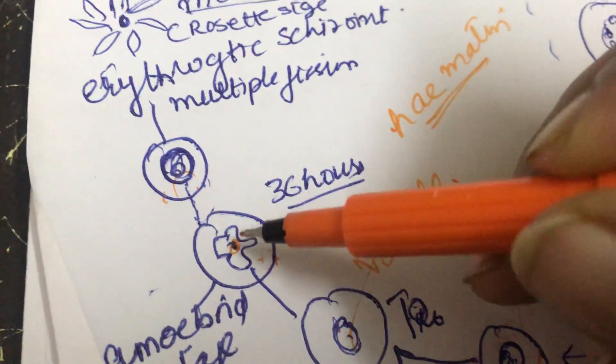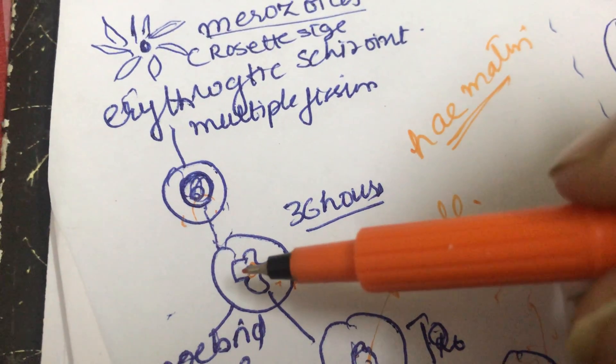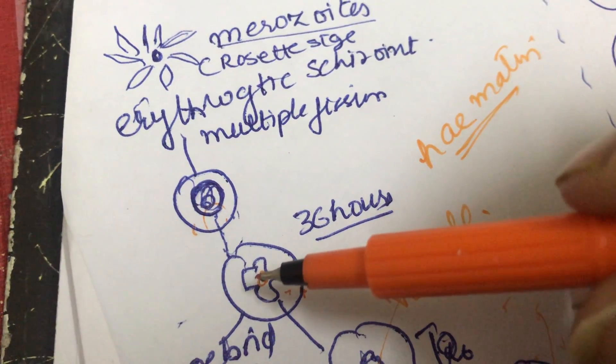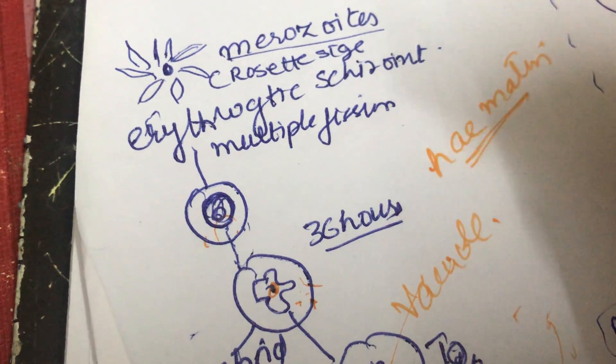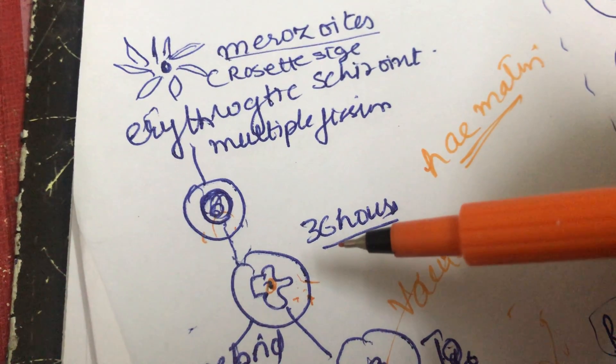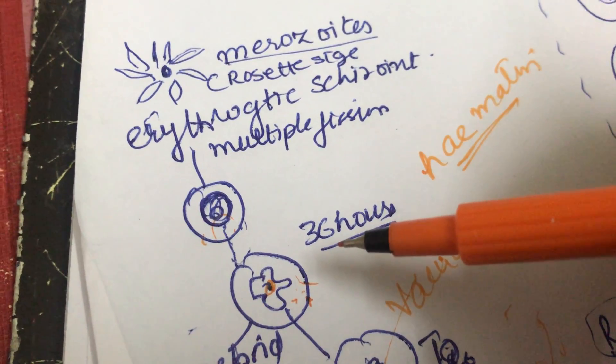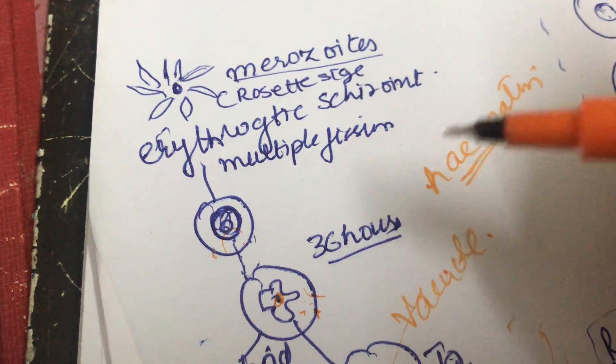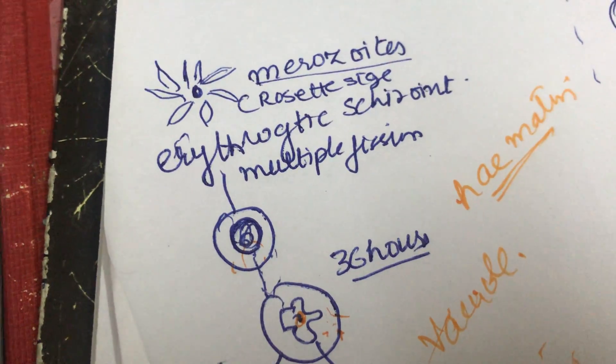This hematin is a small droplet or pigment attached. After about 36 hours, the trophozoite becomes mature and again assumes a rounded shape.